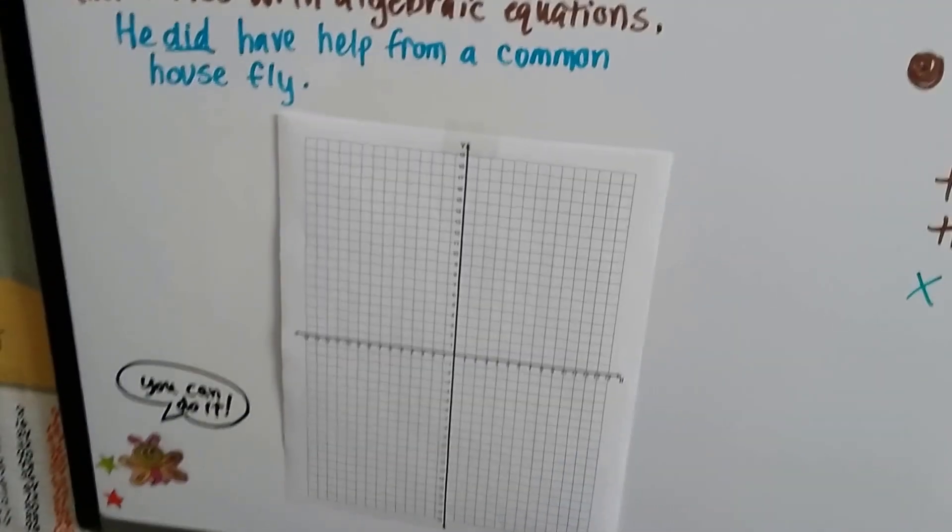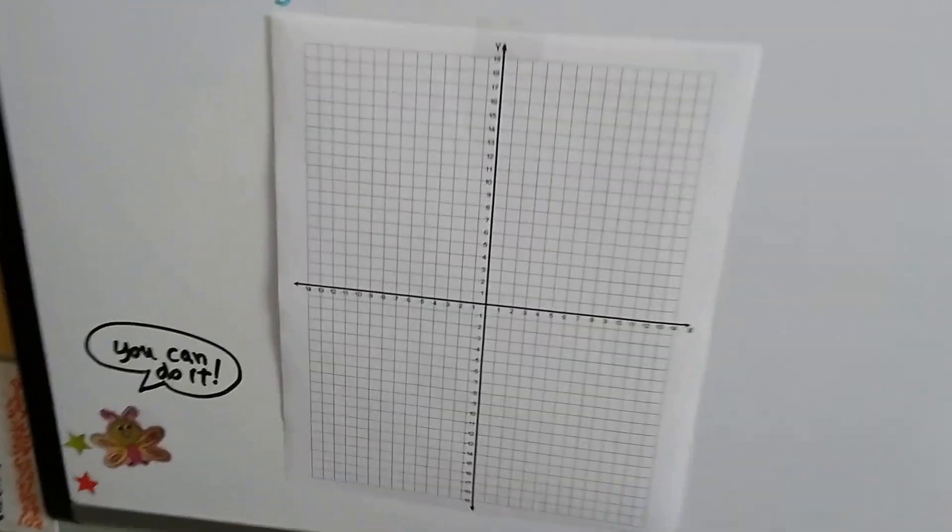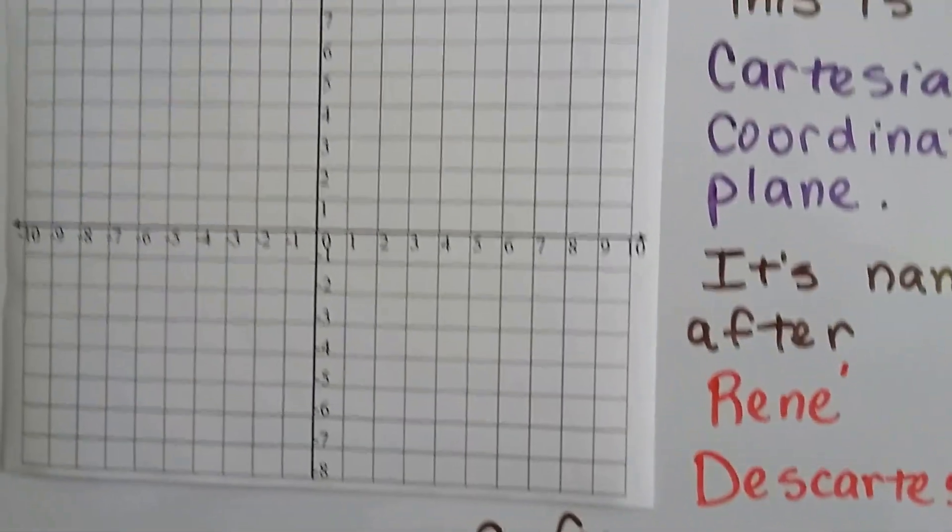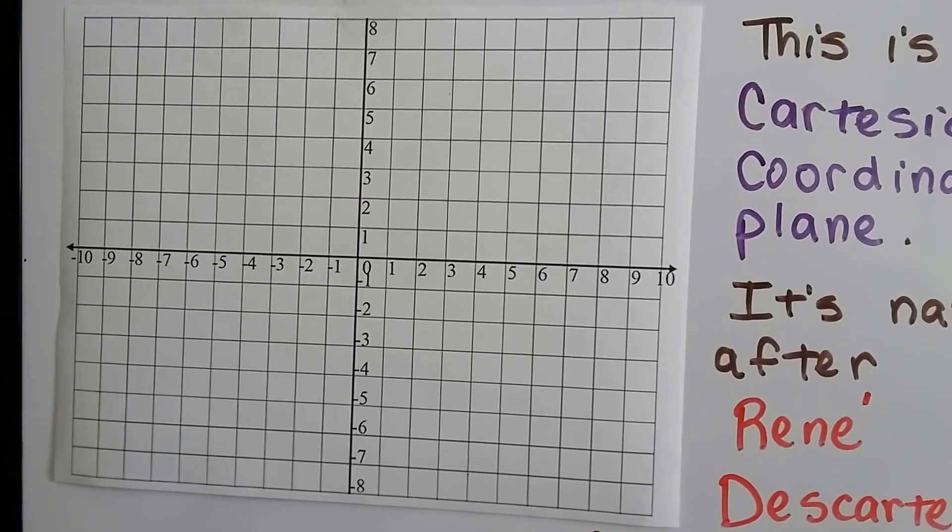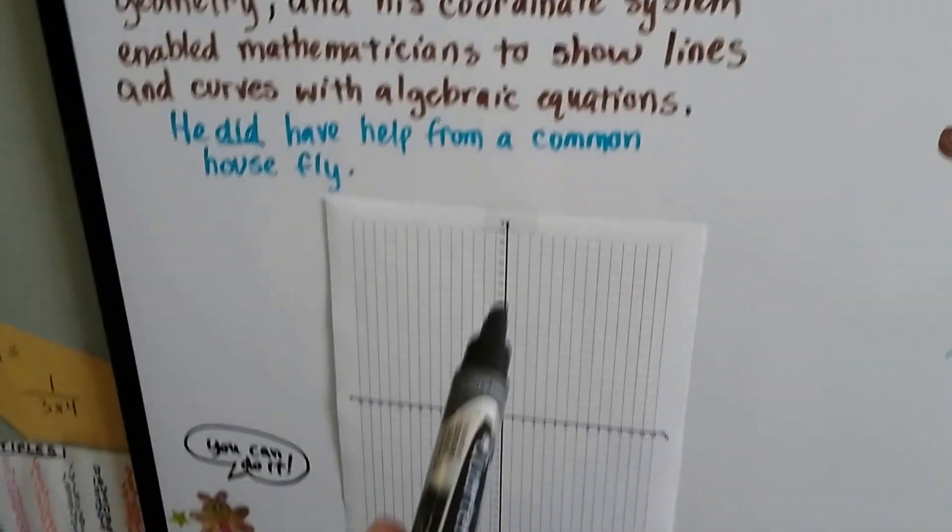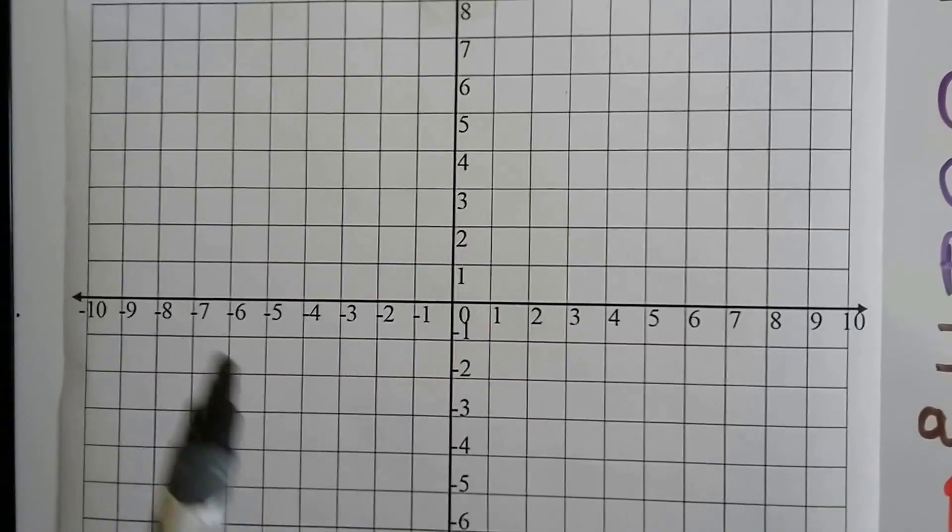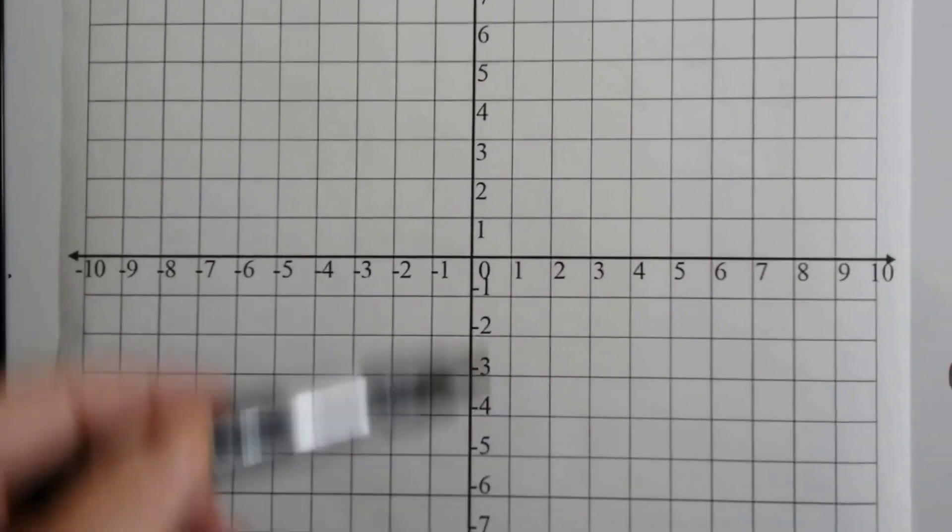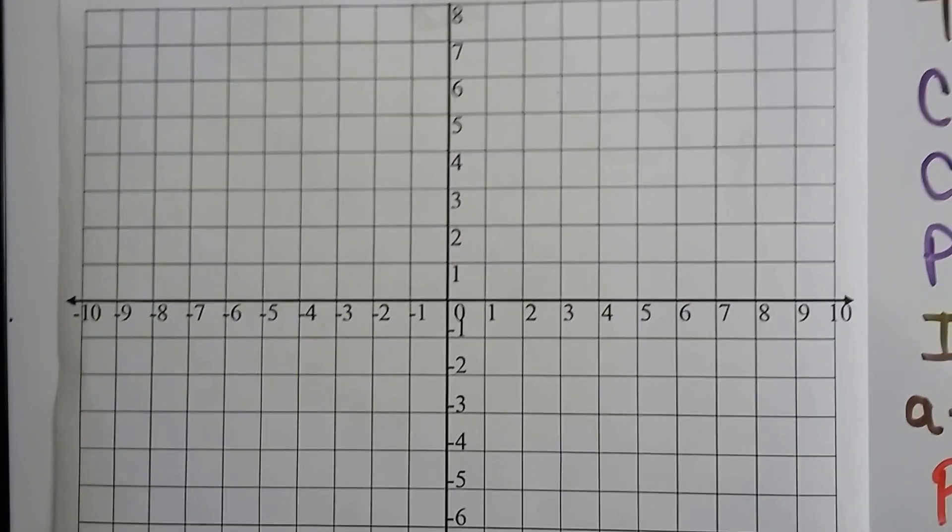If you can see, it doesn't matter if it's going this way or horizontally this way. This is landscape printing, and this is portrait printing. You can see we've got a number line going this way and a number line going this way. See how they meet in the middle at zero?